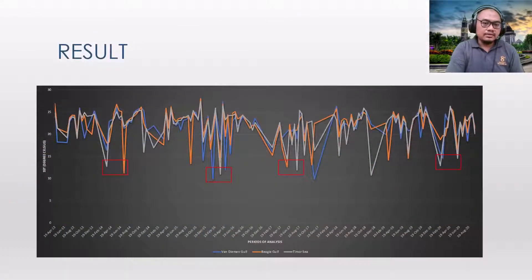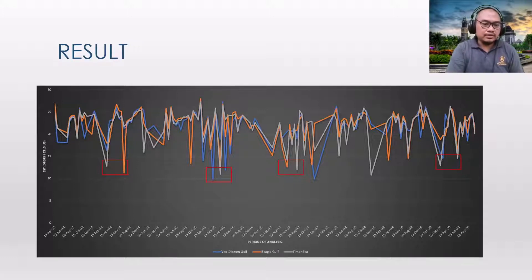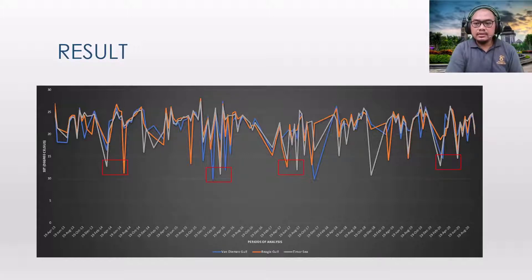Here are the results. This graphic shows the sea surface temperature in degrees Celsius from April 2013 to August 2020. We can observe lower sea surface temperatures in the months of March to August each year, as seen in 2014, 2015, 2017, and 2020. However, the temperature becomes higher especially in 2016 and in 2020, where even in the months of March to August the temperature is not low enough.